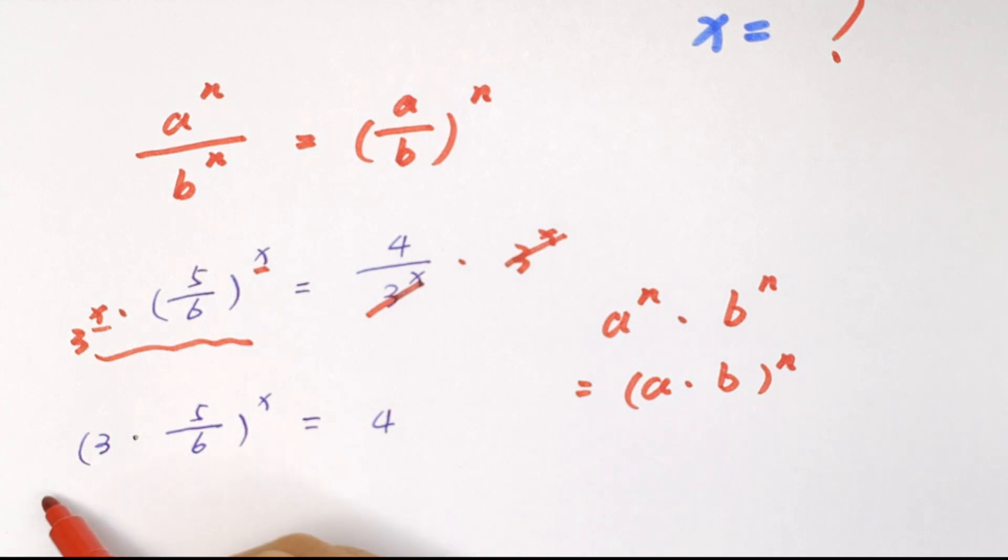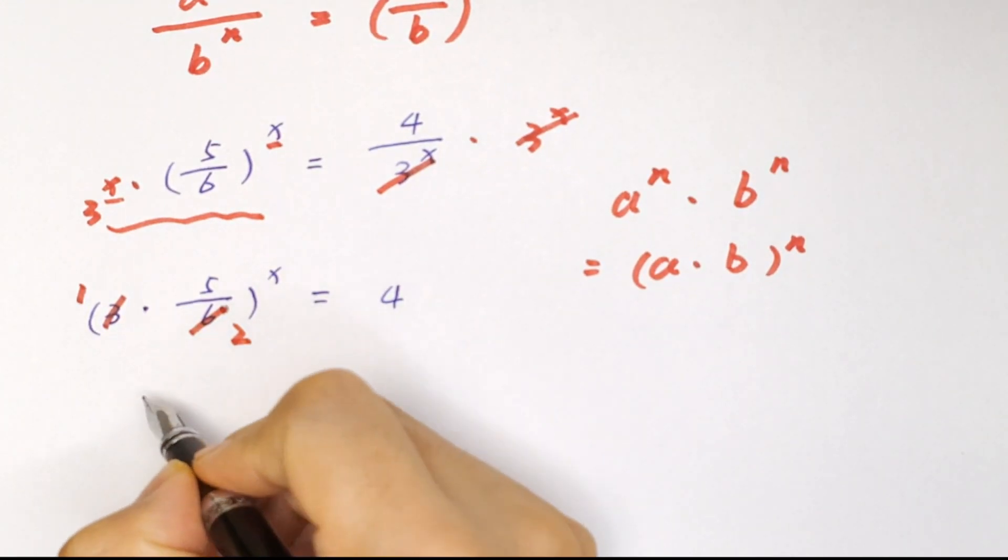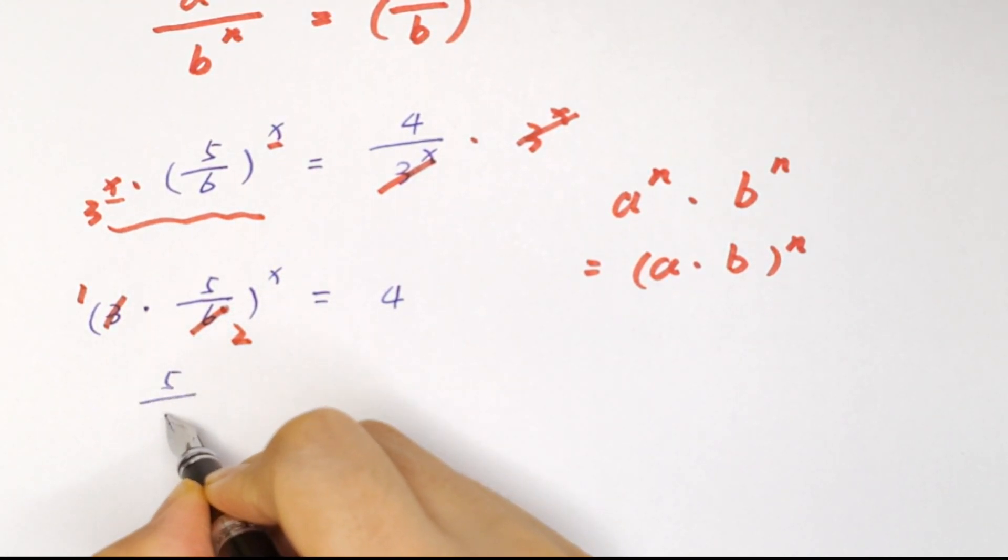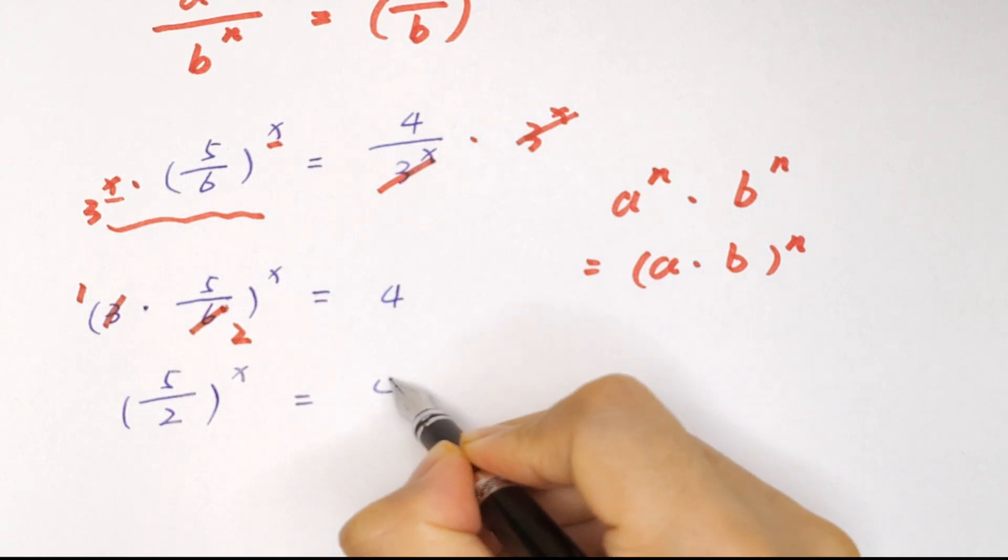Now we divide it by 3 by 1, and this we divide it by 3 by 2. So to be 5 over 2 bracket to the power of x equals 4.